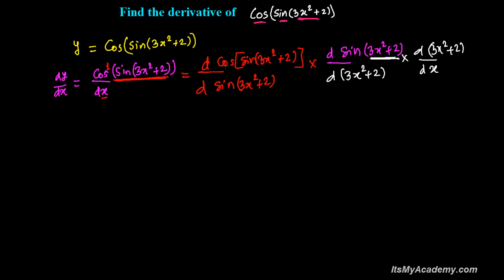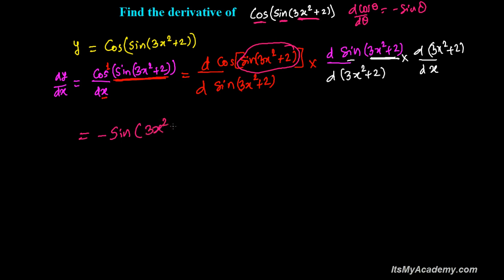Now let's differentiate one by one. The derivative of cosine theta with respect to theta is minus sine theta. So it doesn't matter that theta is sine 3x squared plus 2 — it will be minus sine of that angle, so minus sine of sine 3x squared plus 2.